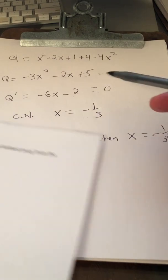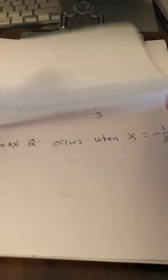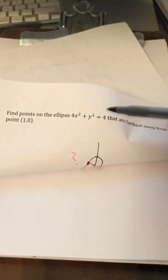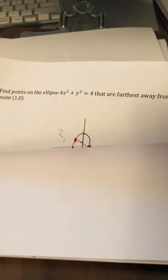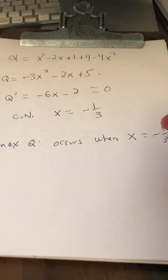So the question asked for the points, plural, on the ellipse that are furthest away from the point (1, 0).